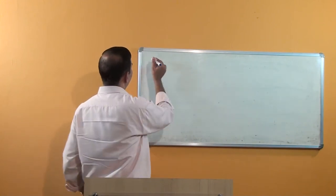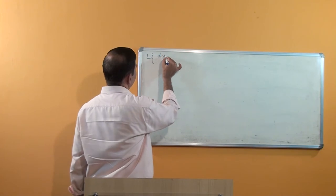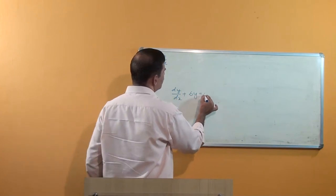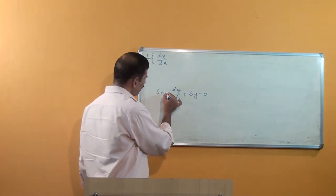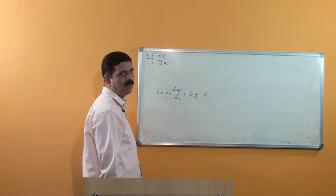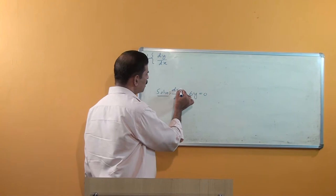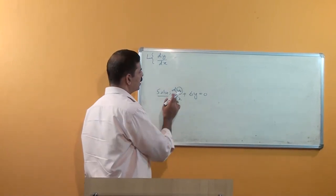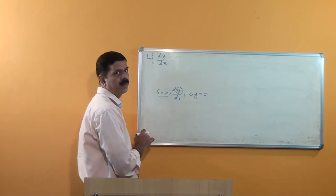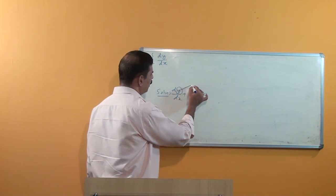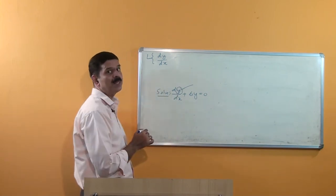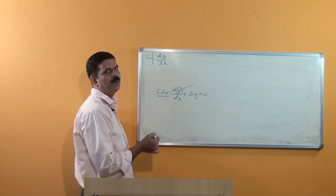Now first you have to recall that if a function is given in the differential equation — for example, dy/dx + 6y = 0 — you know that this is a differential equation. In your second BAC level or earlier classes you have studied how to solve this. Our main aim in the differential equation is to find the unknown function y. In the same way, you can also find the unknown function by applying Laplace transform.